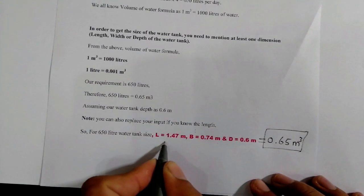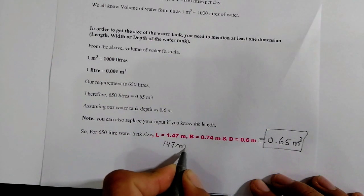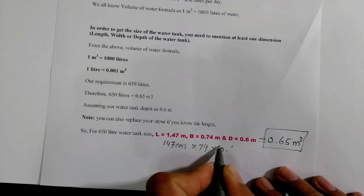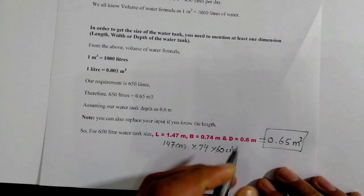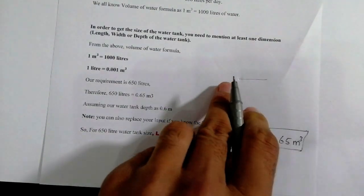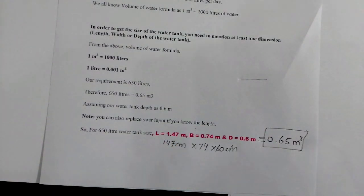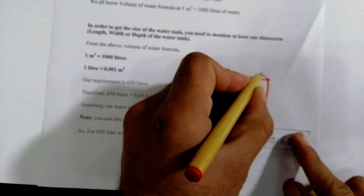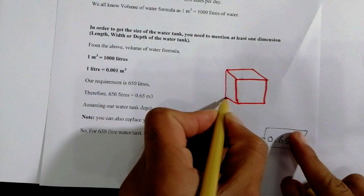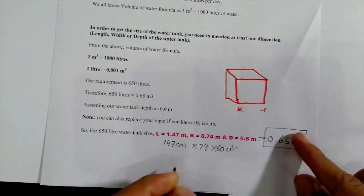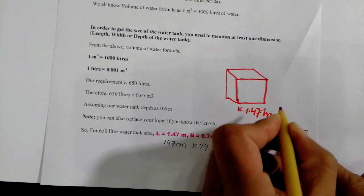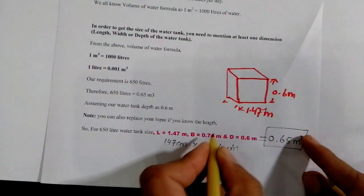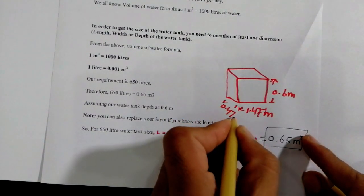In centimeters, the water tank dimensions are: Length = 147 cm, Breadth = 74 cm, and Depth = 60 cm. You can see here this is the water tank diagram. The length of the water tank is 1.47 meters, the depth is 0.6 meters, and the width is 0.74 meters. This is the designed size of the water tank for 4 family members.